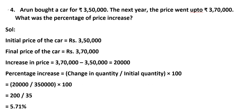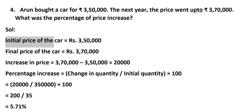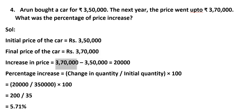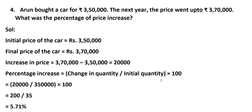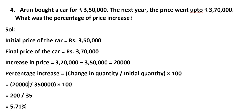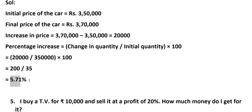Fourth problem: Arun bought a car for Rs. 3,50,000. The next year, the price went up to Rs. 3,70,000. What is the percentage of price increase? Solution: Initial price = Rs. 3,50,000. Final price = Rs. 3,70,000. Increase = Rs. 3,70,000 − Rs. 3,50,000 = Rs. 20,000. Percentage increase = (Change ÷ Initial) × 100 = (20,000 ÷ 3,50,000) × 100 = 200 ÷ 35 = 5.71%.